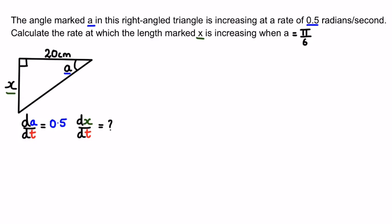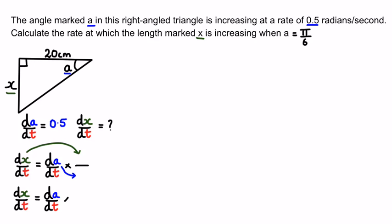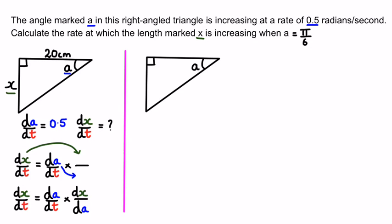We'll set up a chain rule equation: dx/dt = da/dt × dx/da. The same trick as before — we put dx in the numerator and da in the denominator so that the two da's cancel out, leaving dx/dt on both sides. Now we need to find an equation linking x and a, since not everything will be a circle with a neat formula.